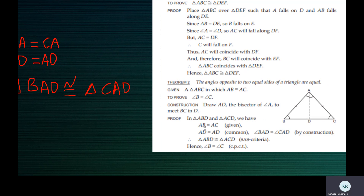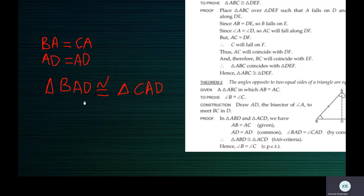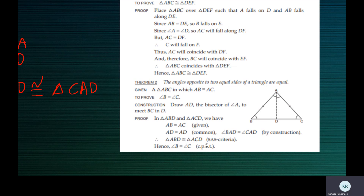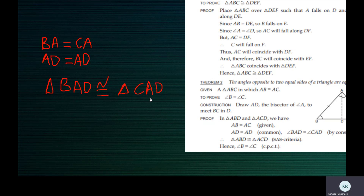You can see here ABD congruent to ACD is also correct. If you say ABD for the first, you must say ACD for the second. You can also write BAD congruent to CAD instead. So ABD congruent to ACD, or BAD congruent to CAD — either way is correct. This means angle B is equal to angle C.